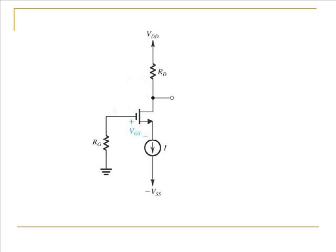Before we start looking at amplifiers as such, let us look at what biasing strategy will be used. You can use any one of the biasing strategies discussed in a previous lecture. However, through this lecture, we will look at the constant current source biasing for the amplifier.